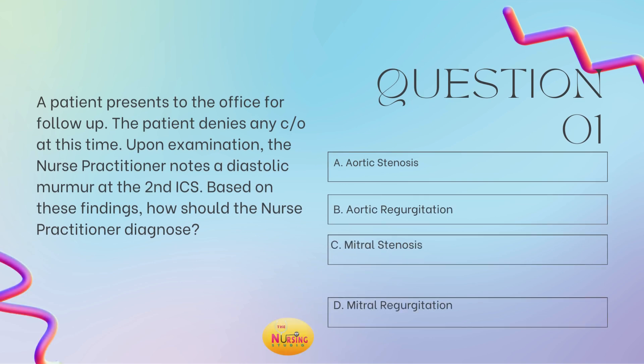Alright, let's get into question number one. Question number one states: a patient presents to the office for follow-up. The patient denies any complaints at this time. Upon examination, the nurse practitioner notes a diastolic murmur at the second intercostal space. Based on these findings, how should the nurse practitioner diagnose? Is it A, aortic stenosis; B, aortic regurgitation; C, mitral stenosis; or D, mitral regurgitation? Take a moment and tell me what you got.